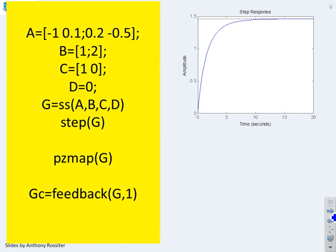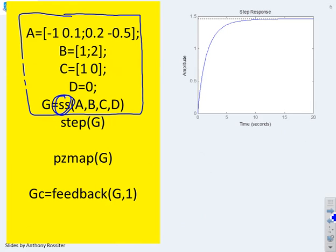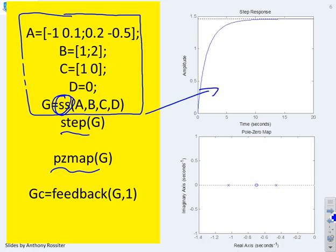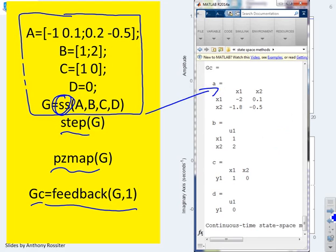Using other functions in MATLAB, you'll see the first block of code here defines the state-space matrices A, B, C, D, and then uses the command SS to generate a state-space object G. Once I've got that state-space object, I can use it in functions like STEP, which is illustrated here, PZMAP, which is illustrated here, or indeed FEEDBACK, which is illustrated here. It's given you an amended state-space model to show you what would happen if you connected this with unity negative feedback.